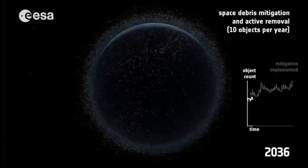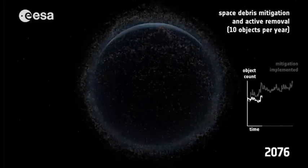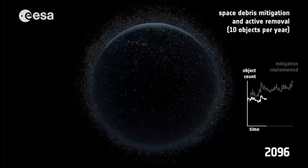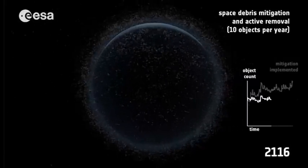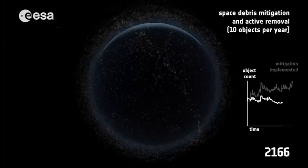In order to allow spaceflight to continue without restriction in future, about five to ten of these objects need to be actively removed every year. This is the only way to fully stabilize the space debris population in space.